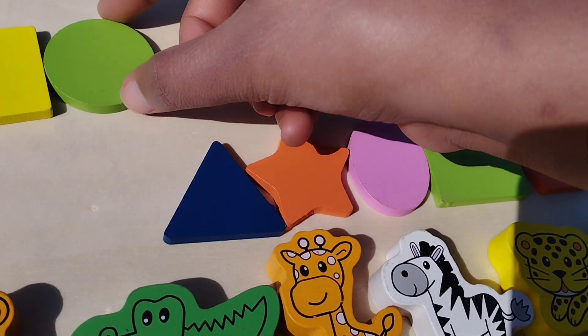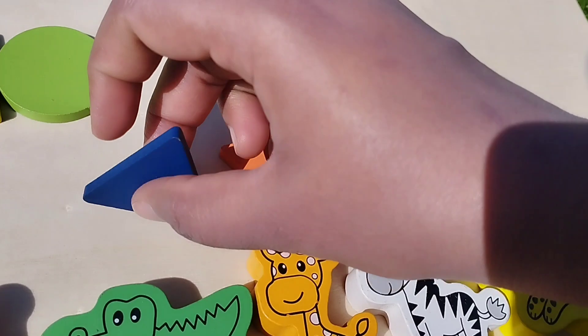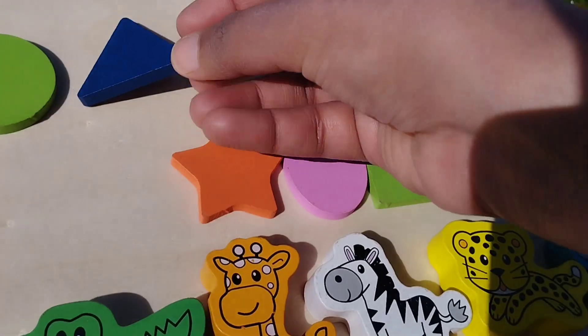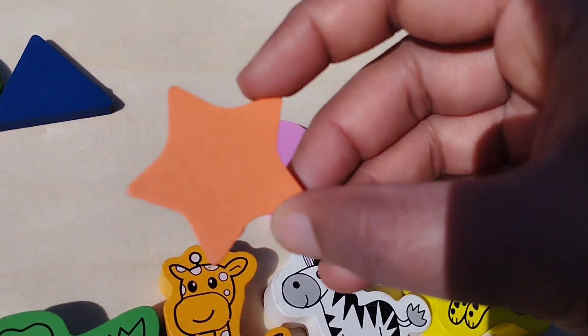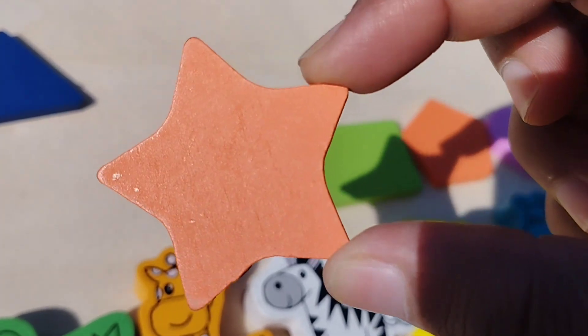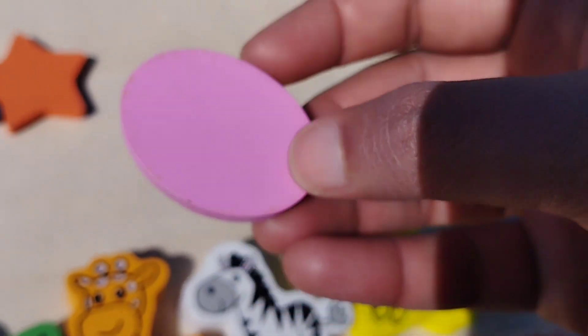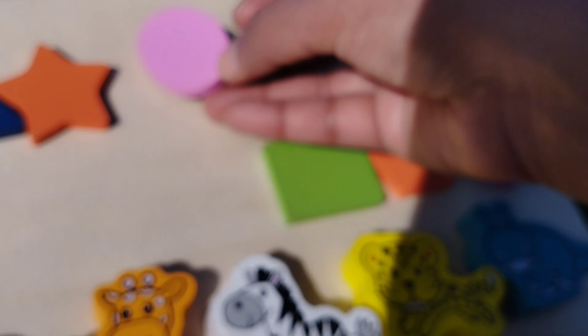Circle. The next one is triangle. This is triangle shape. Star shape. This is star shape. The next one is oval. This is oval shape.